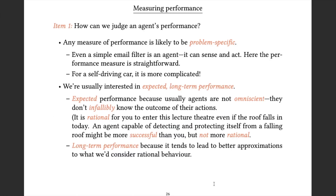The two points regarding measuring performance: firstly, it's going to be a problem-specific thing. Agents can be incredibly simple — an email spam filter is an agent. It can sense its environment, which is your mailbox, and it can act on it, deciding whether to let email through or send it to a spam folder. It has a very straightforward performance measure: identify spam, don't misclassify real mail as spam, and don't miss actual spam.